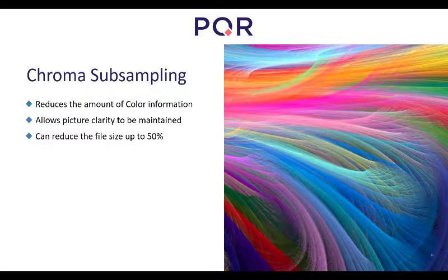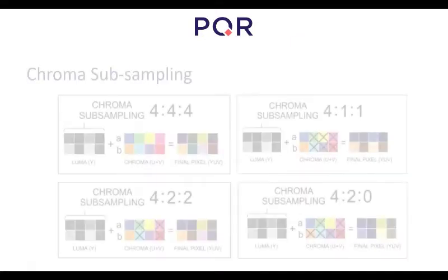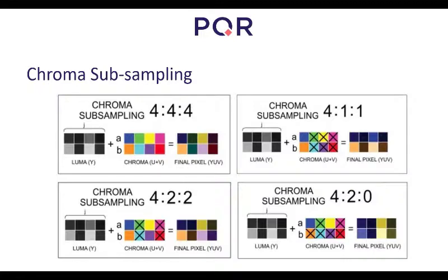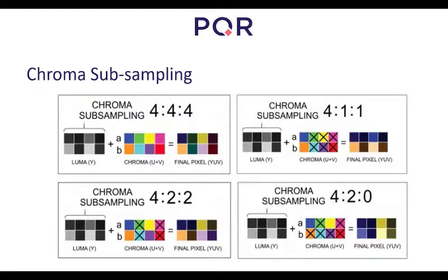Chroma subsampling uses YUV to reduce the amount of color information, which can reduce file size by up to 50% while maintaining picture clarity. In the upper left corner you have 4:4:4, which means no downsampling. A very common format is 4:2:0 in the bottom right corner, which means that in a block of 4 pixels only the upper-left one is used for chroma. All the luma — the first 4 — is maintained. The '2' means only the first two on the upper row are used, and the '0' means none of the bottom row chroma values are used. This way you really reduce the amount of information, but you lose color detail.